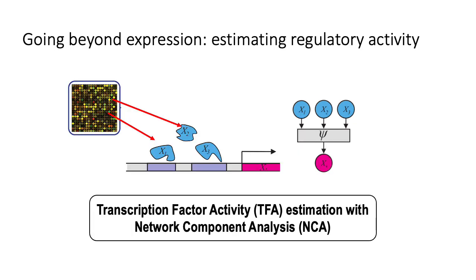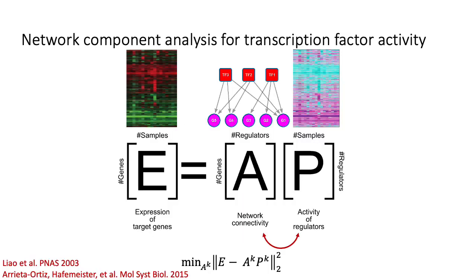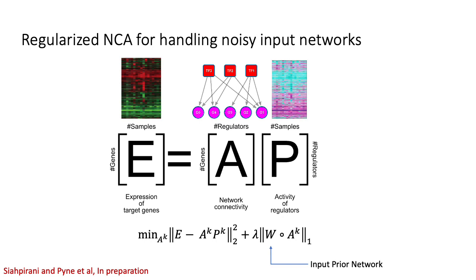Network component analysis is used to estimate the actual effectiveness of the transcription factor. To accomplish this task, NCA leverages known motif binding sites of specific transcription factors to estimate the effective potential of that transcription factor. NCA is solved via the following equation. The expression matrix is modeled as a matrix product of the prior network adjacency matrix A and the transcription factor activity matrix P. Using a constrained maximum likelihood update procedure, A and P are iteratively updated to minimize the difference with the true expression matrix. NCA is affected by noise in the input prior network. To combat this, we have introduced a regularization parameter to the update objective function. This L1 norm measures the difference between the input prior network and the inferred network connectivity.